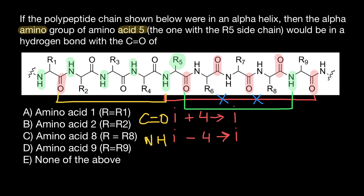Now let's choose the correct answer. If the polypeptide chain shown below were in an alpha helix, then the alpha amino group of amino acid number five is going to make a hydrogen bond with the carboxylic group of amino acid number one. So the correct answer is A.